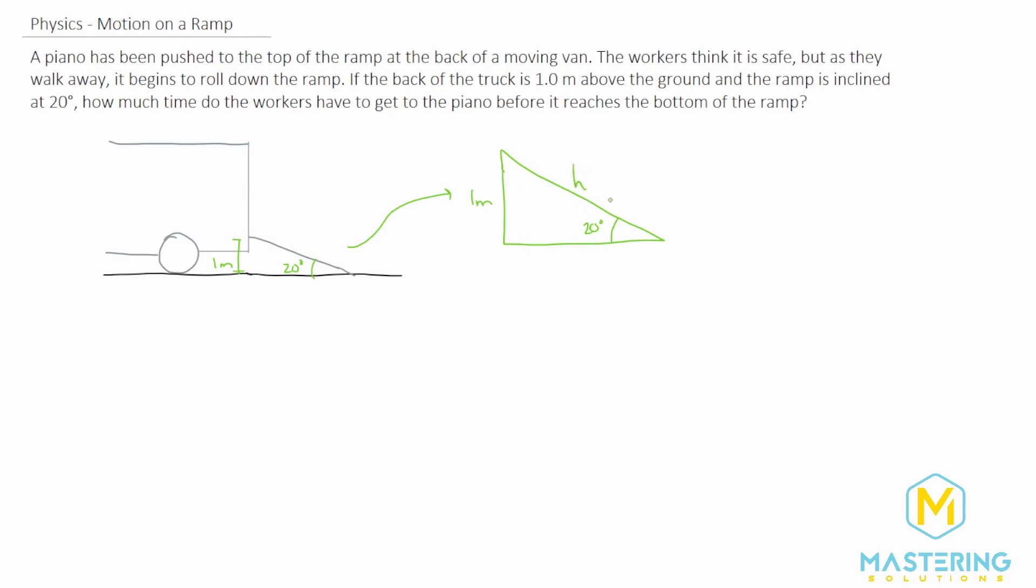H, we'll say, is the hypotenuse for this ramp, and we need to figure out how long is the ramp. To do that, we'll use trigonometry. We have the opposite and the angle, so we'll use sine equals opposite over hypotenuse. We're looking for hypotenuse, so first let's move it over to the other side of the equation.